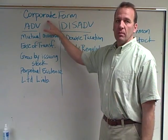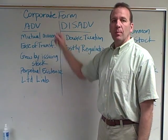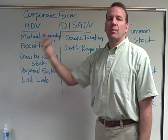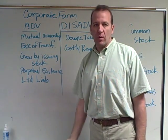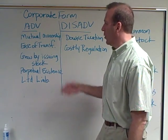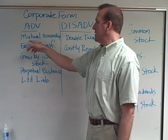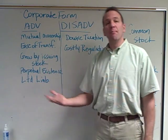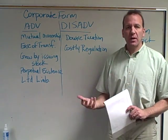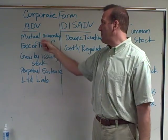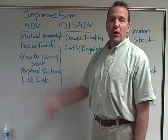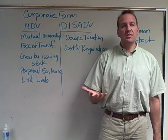Right now we're going to be looking at the corporate form of business and the advantages of having a corporation over a sole proprietorship or a partnership. Some of the advantages of forming a corporation is that you can have mutual ownership — you can have multiple owners, and if you're a company like General Electric or Microsoft, you're going to have thousands and thousands of owners.